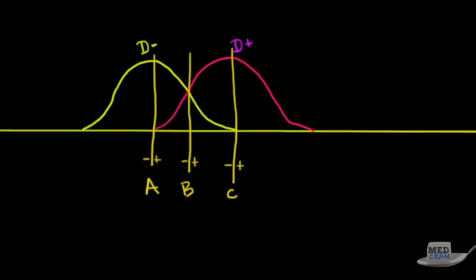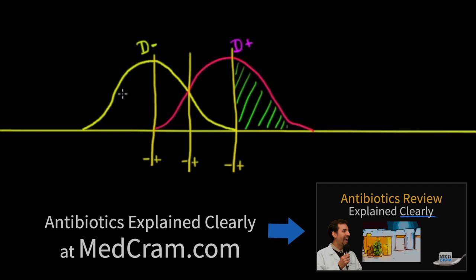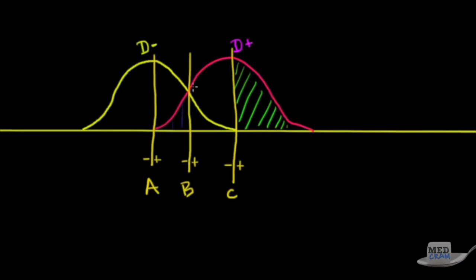Take point C as an example. If we set the alarm at C, everything to the right is positive — and since it belongs to the actual disease, it would be a true positive. But everything to the left would be negative, including some false negatives still belonging to the disease and some true negatives that don't. Notice that by moving C far to the right, there are no more false positives — a very low false positive rate means you are very specific.